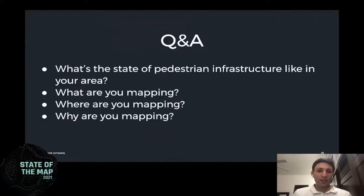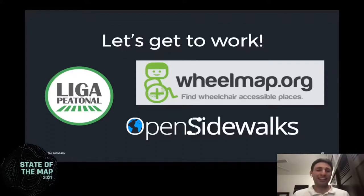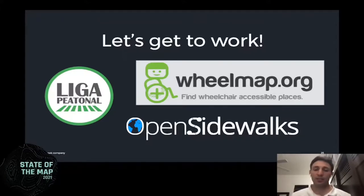Before we get to questions, I want to shout out a few people and organizations doing great work in this space. There's Liga Peatonal, based in Mexico, doing fantastic work thinking about how to make cities more suitable for pedestrians and getting government thinking about that beyond the automotive side of things. There's WheelMap, based in Germany, doing great work particularly around accessibility. And then there's Open Sidewalks, which has been thinking about how to create a standard for mapping sidewalks — US-centric, based out of the University of Washington — but a lot of it can be applied more broadly. These are questions we all want to be asking: how can we collectively map pedestrian infrastructure?